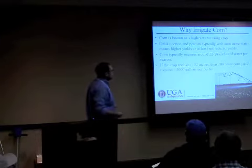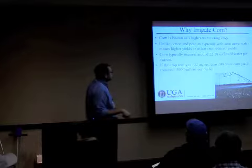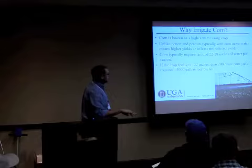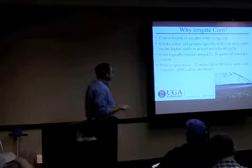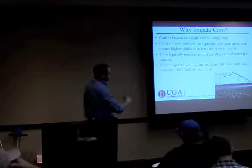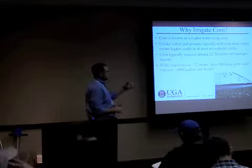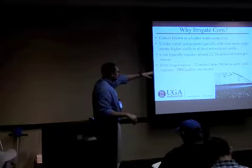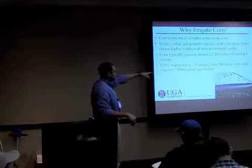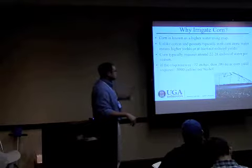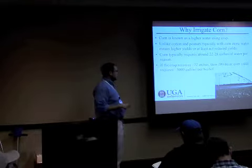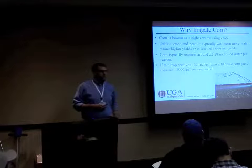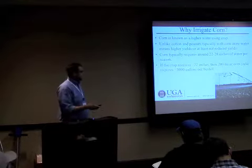Corn is a pretty high water-using crop — ranging around 22 to 28 inches of water per season. If we put 22 inches of water on that crop and get a 200 bushel per acre yield, that's 3,000 gallons per bushel to create that crop. That kind of puts it in perspective — that's a lot of water.